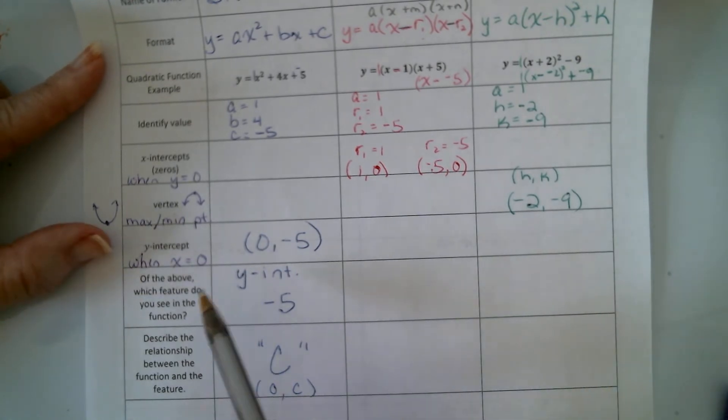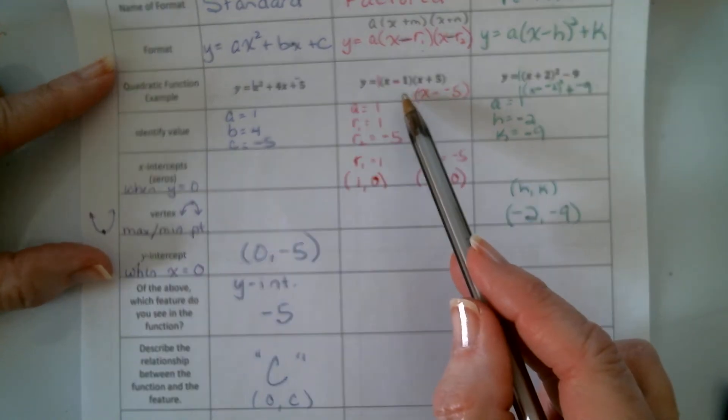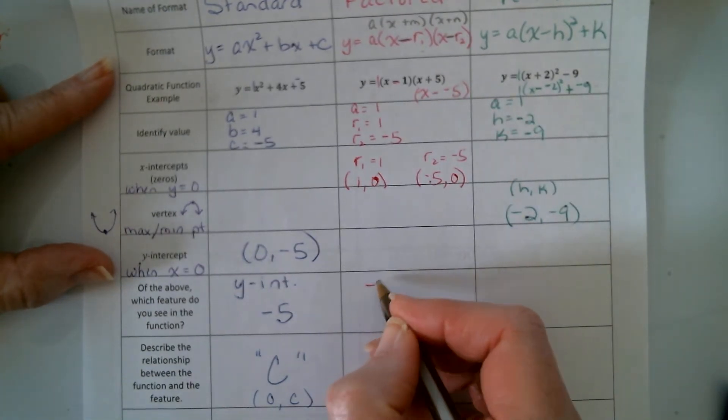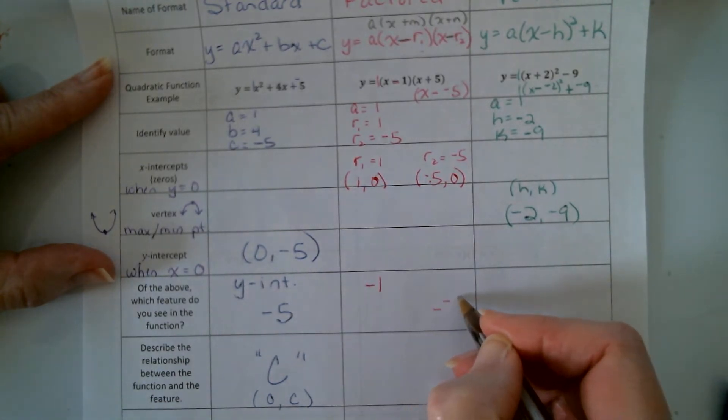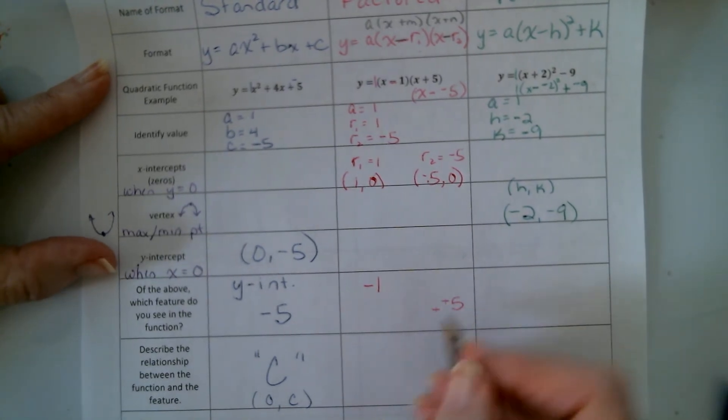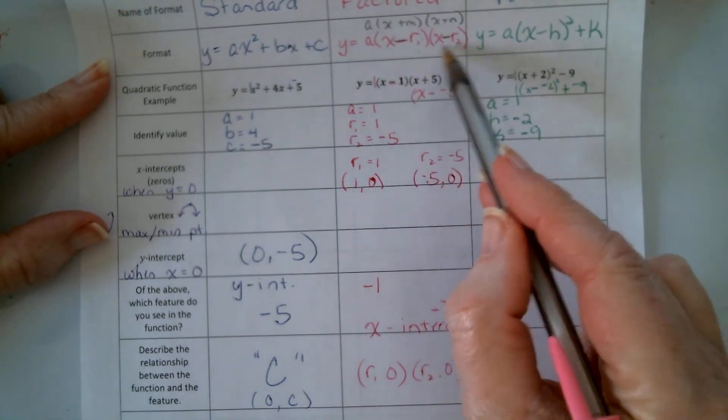If we come over here and say, well, in this function, what's the feature that we see? Well, we see the negative one here, and technically that positive five, right, and what is, those are the x-intercepts, where we took that root one and root two, and that was because we made them into this subtraction format, right.